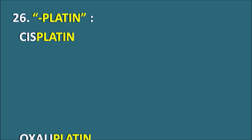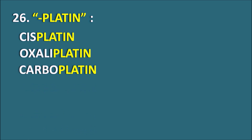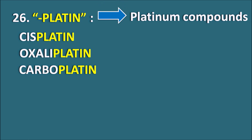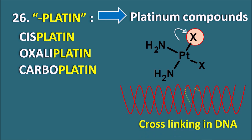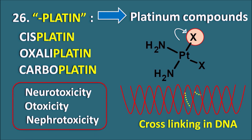The 26th suffix is Platin. We have drugs like Cisplatin, Oxaliplatin, and Carboplatin. All have the suffix Platin, indicating they are platinum compounds. Platinum is the central atom attached to amino groups and a leaving group such as a halogen or ester. When this group is removed, platinum becomes positively charged and produces a nucleophilic attack on DNA, creating inter or intra strand cross-linkage — acting like alkylating agents and inhibiting DNA replication. Cisplatin is highly toxic, producing neurotoxicity, ototoxicity, and nephrotoxicity. The severe nausea and vomiting caused by ototoxicity can be controlled by 5-HT3 antagonists like Ondansetron.